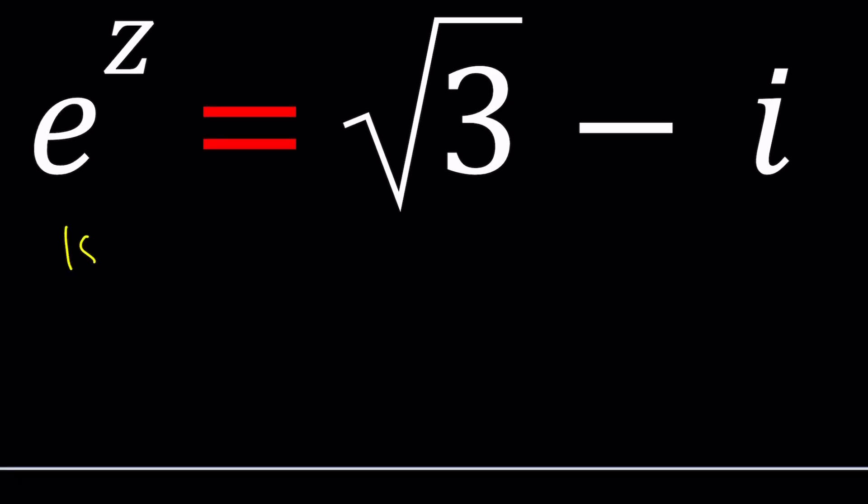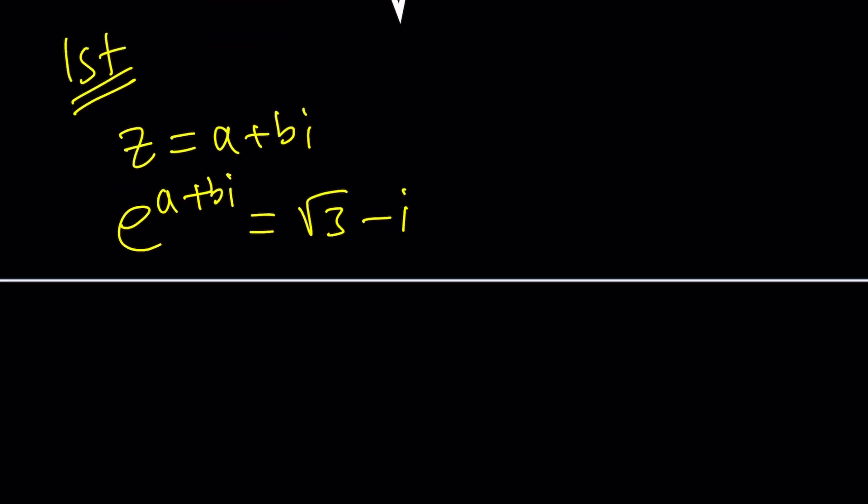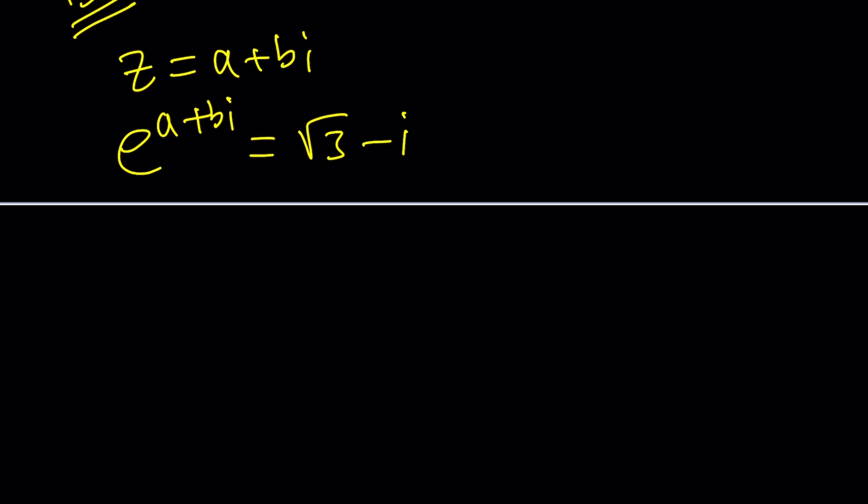So the first method we're going to use z equals A plus B I because it's the name of this channel. Let's replace z with that and set it equal to root three minus i. Now we can separate this into e to the A and e to the B I. Notice that A is a real number and B is a real number by definition. So e to the A is also real and this is complex. There's a formula called Euler's formula that allows us to write e to the power B I as cosine of B plus i sine of B.